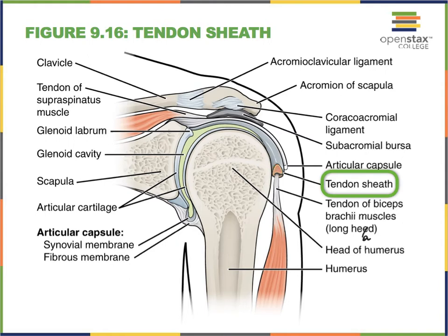That tendon goes all the way across the head of our humerus to grab onto the very start of our scapula, so it is literally squeezed between this hard bone and the softer material of the arm. To prevent too much rubbing and friction, we have a tendon sheath that wraps around the tendon there.